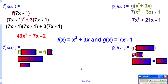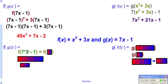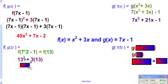For f of g of 2, I prefer to work from the inside out. Start with g of 2: go to g which is 7x minus 1, replace x with 2, giving 7 times 2 minus 1, which simplifies to 13. Then evaluate f of 13: go to f, replace both x's with 13, giving 13 squared plus 3 times 13. Add those together to get the final answer.